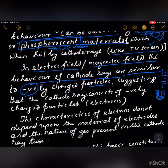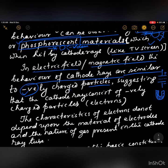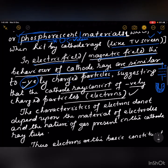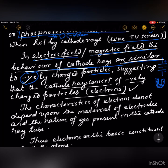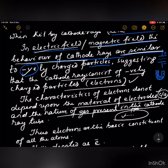The behavior of cathode rays in electric and magnetic fields is similar to negatively charged particles, suggesting that cathode rays consist of negatively charged particles called electrons. The characteristics of electrons do not depend upon the material of the electrodes — cathode or anode — nor on the nature of the gas present in the cathode ray tube. Any gas can produce cathode rays if high voltage and low pressure are present.